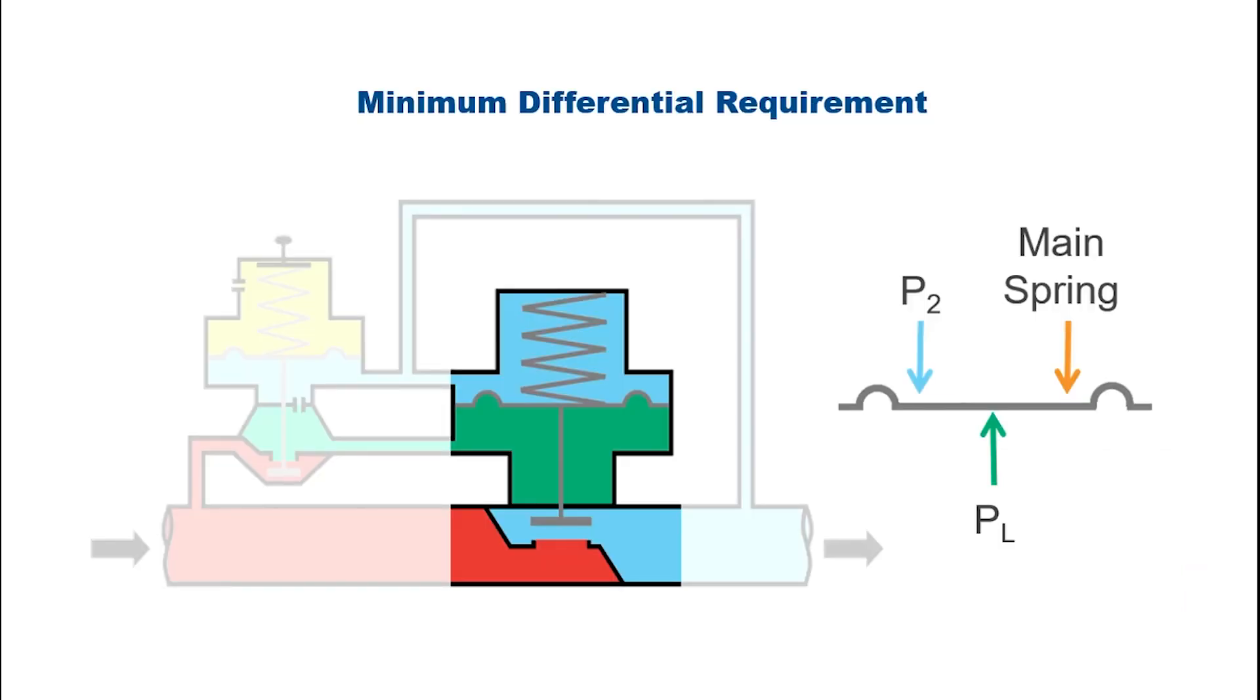Pilot-operated regulators require a pressure differential between their inlet and outlet to open the main valve. The main spring holds the main valve in a closed position until loading pressure increases high enough to overcome the spring force. Pilot ops with small diaphragm areas require higher differential pressures to fully open the main valve.